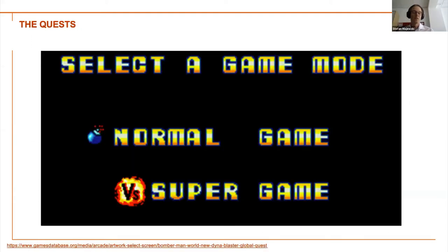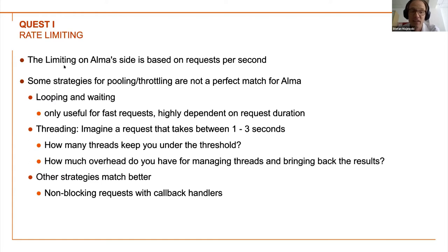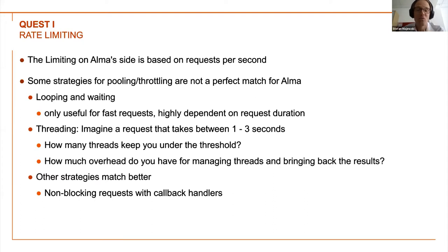That's a challenge too, but what is a challenge without a quest? So we selected our game mode — somewhere between normal and super. Quest number one is rate limiting, because whatever you do, you need to make sure ALMA doesn't start rejecting your requests — a rejected request is a not-fulfilled request. The limiting on the ALMA side is based on requests per second, no matter how long the request takes. Some strategies for pooling and throttling are not perfect for ALMA — looping and waiting is one strategy for a sequence of requests without exceeding a threshold.